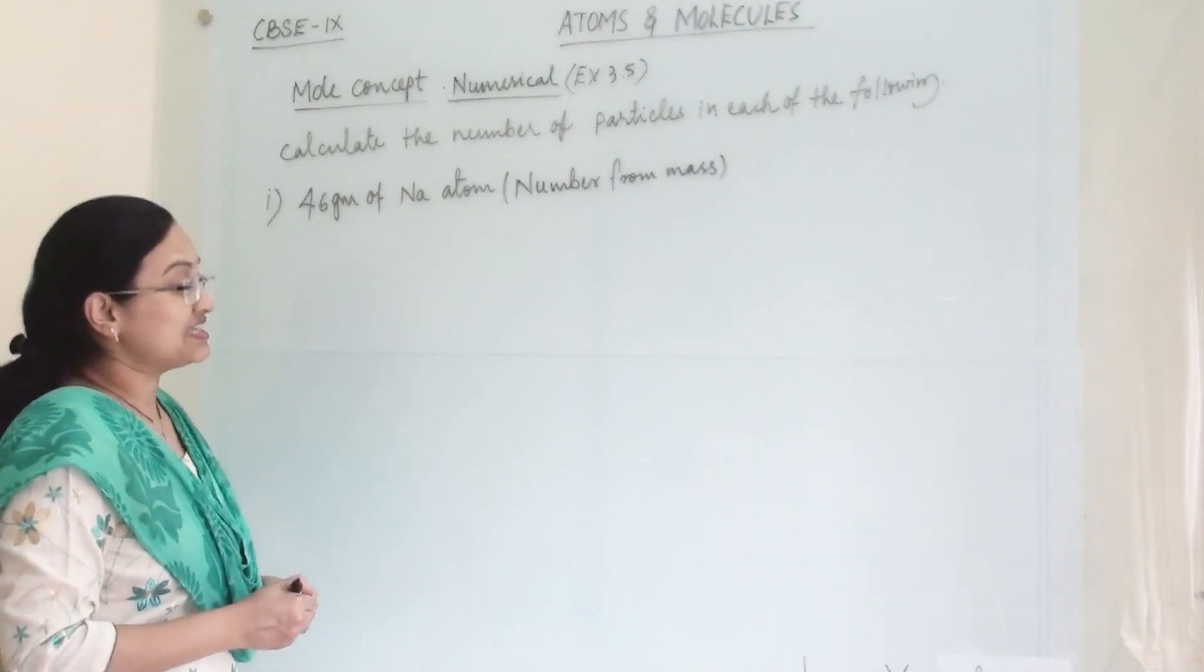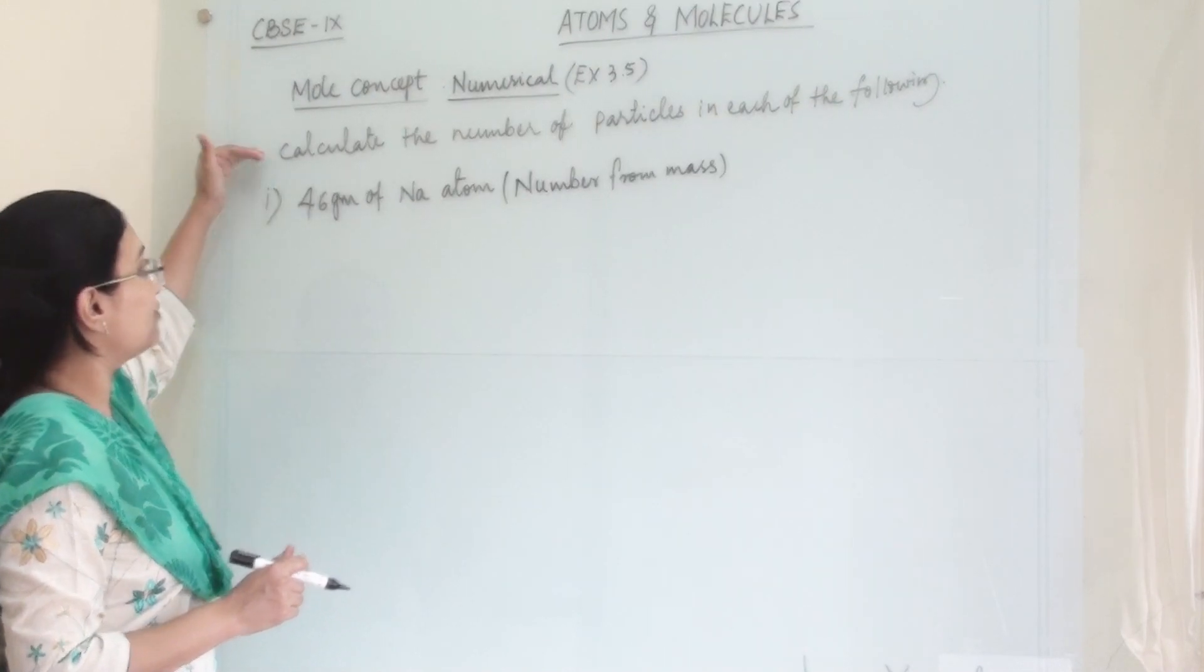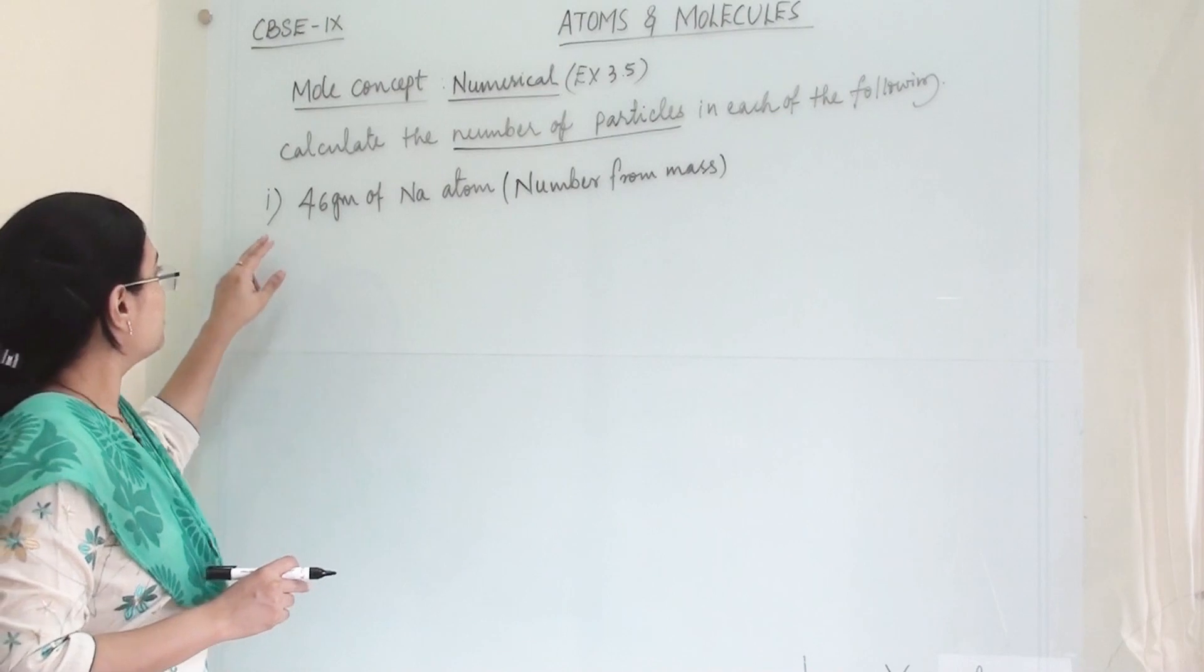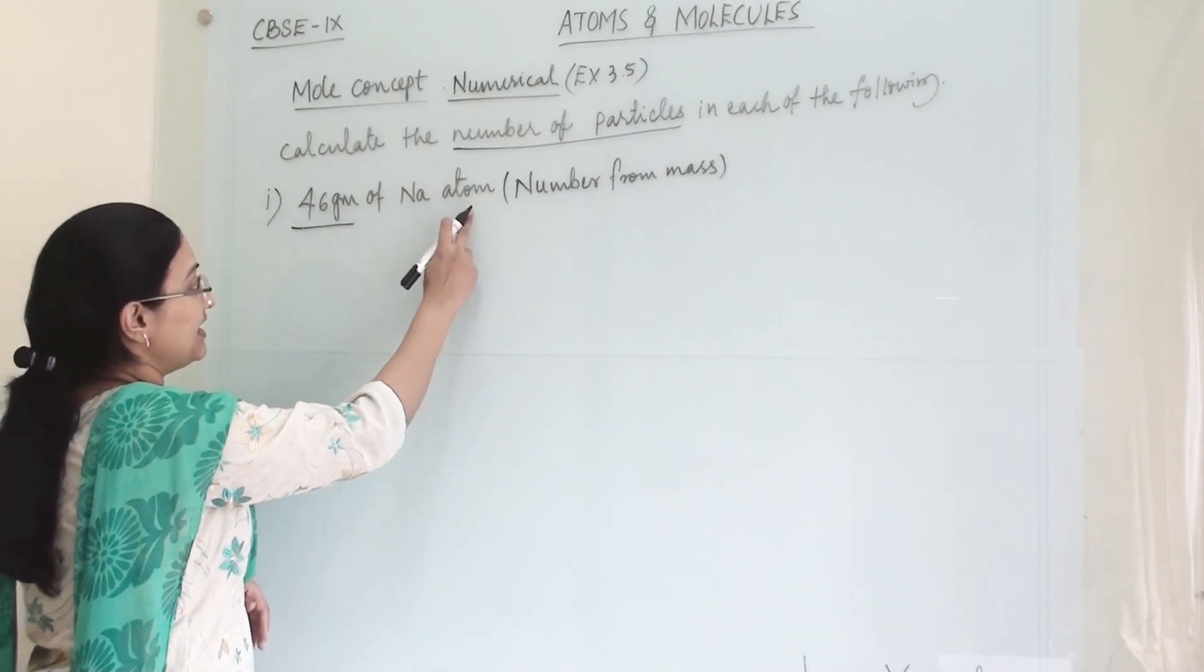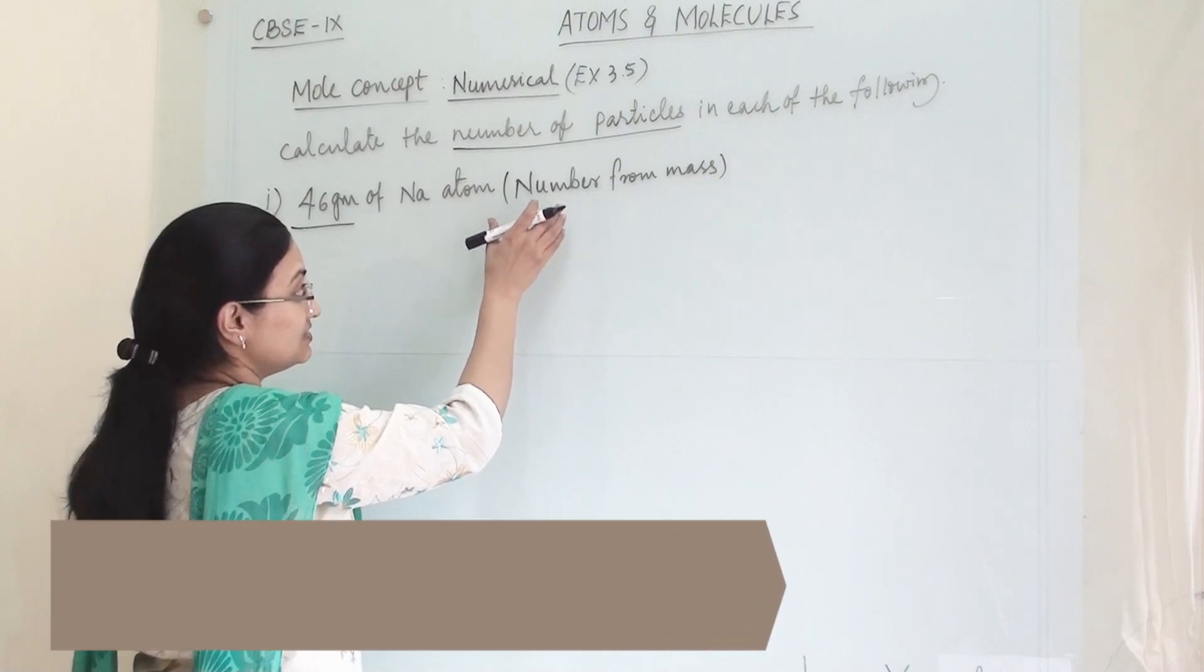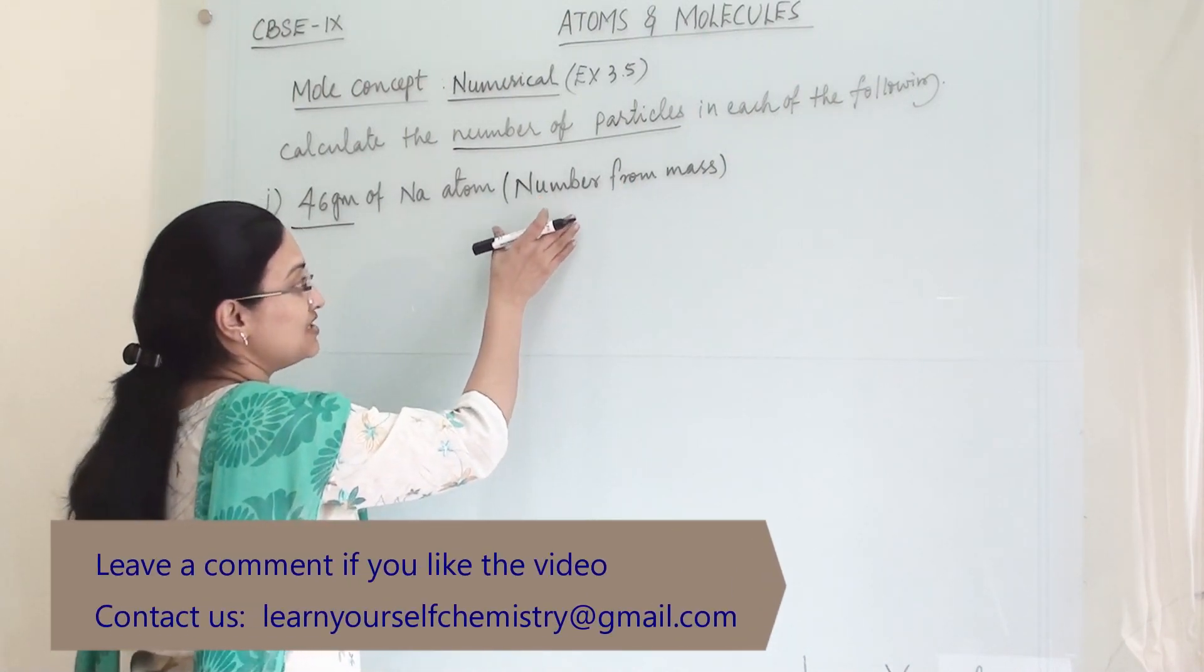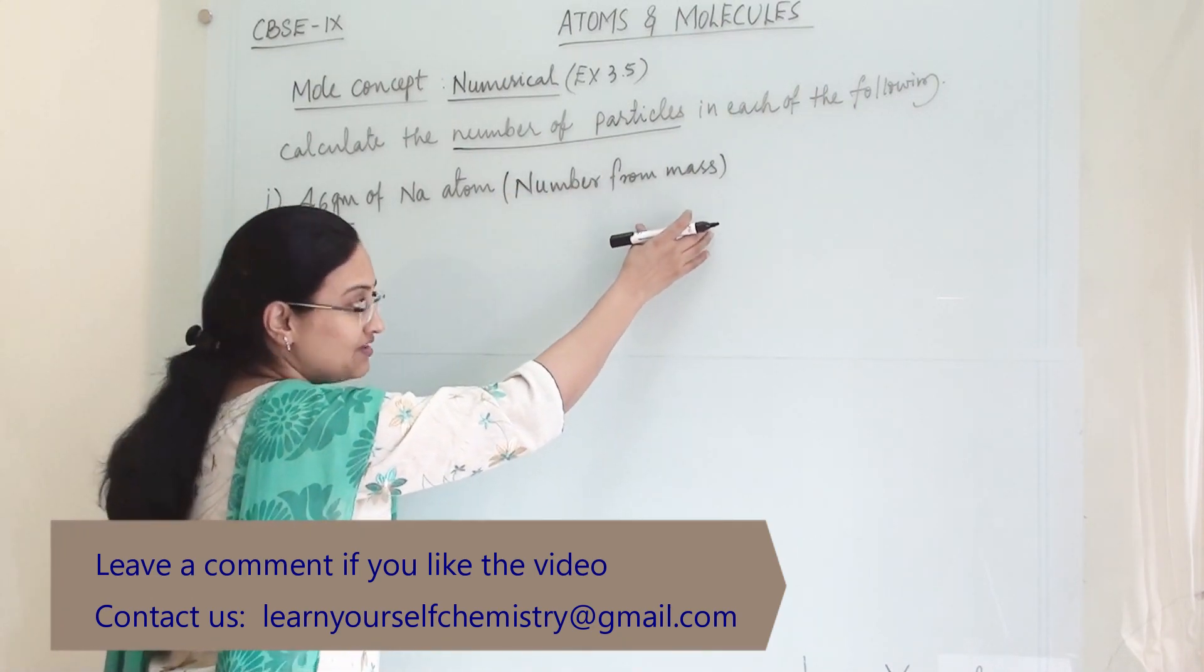So this is a solved example from the textbook, example 3.5. In this we are going to calculate the number of particles. The first is 46 gram of sodium atom. This is the given detail and we have to find out the number of particles. Once we find this, it will be called number from mass - that means we are finding the number of atoms from the given mass.